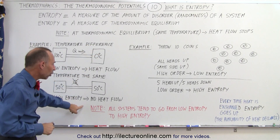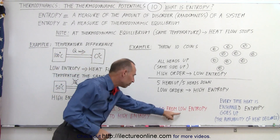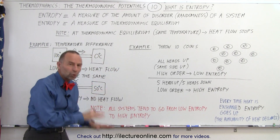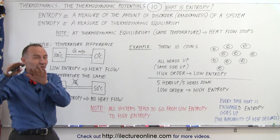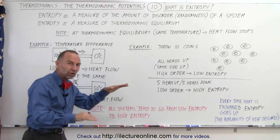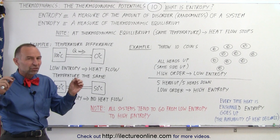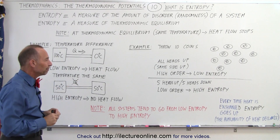Notice that all systems tend to go from low entropy to high entropy, from an ordered state to a disordered state, or from temperature differences to temperatures being the same. That's the general principle of entropy.